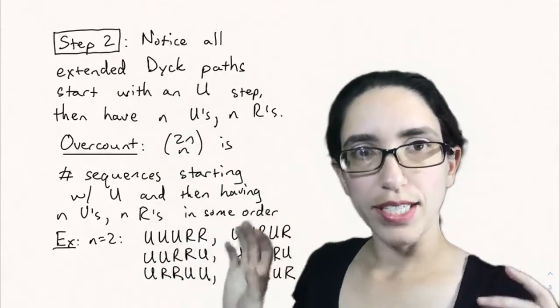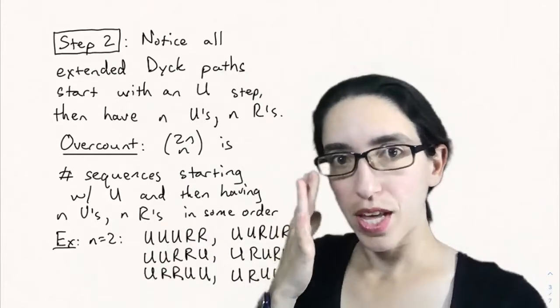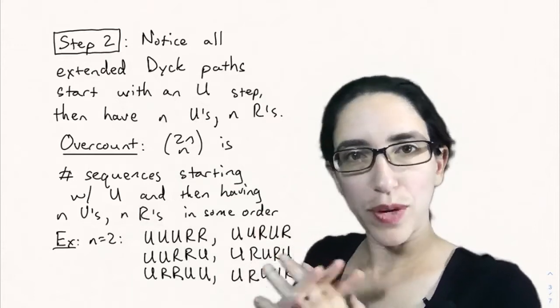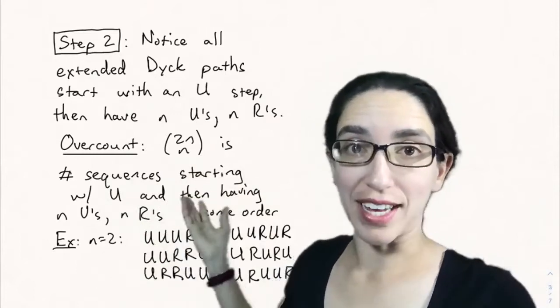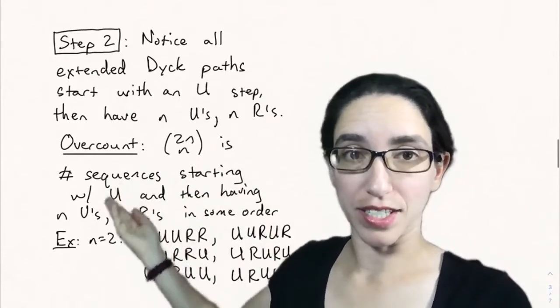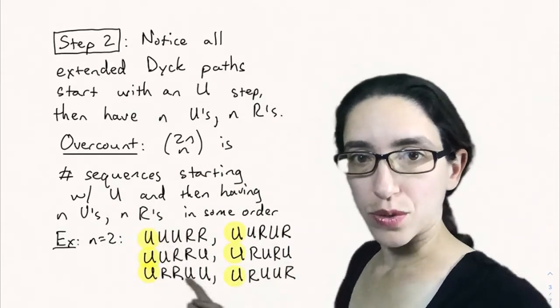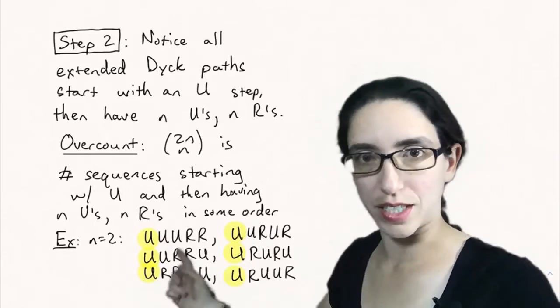Step two: notice that all the extended Dyck paths start with an up step, because that's how we construct them. And then they have n Us and n Rs after them. So if we wanted to just overcount without worrying about whether it stays above the diagonal, 2n choose n is the number of possible sequences that start with U and then have n Us and n Rs in some order. Here's an example for 2 Us and 2 Rs after a U. There are six of them, 4 choose 2.